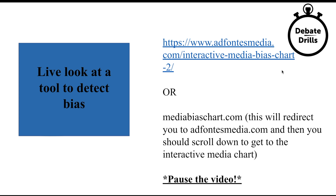Now let's take a look at a live tool to detect bias. In addition to all of those questions I just gave you, there's also a really helpful tool I used in high school called MediaBiasChart.com. This will show you whether a source is biased. It's not a definitive authority, but it's often really helpful. You can type this link into your browser or look up MediaBiasChart.com, which will redirect you to AdFontisMedia.com, and then scroll down to get to the interactive media chart. Pause the video and I'm going to walk you through what the different parts of the media bias chart mean once you have it open.